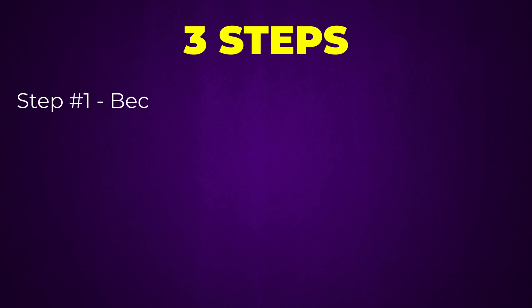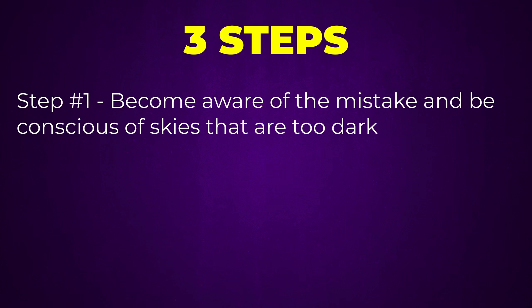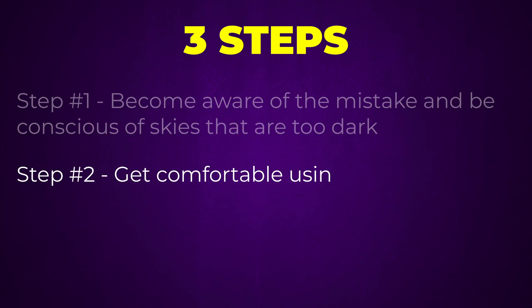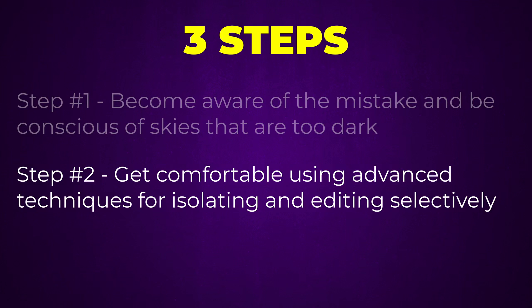So how do you guarantee that you never make this mistake in your own editing again? Well, in three steps. You've already covered step one, which is to just become aware of the mistake and be conscious of skies that are too dark compared to everything else. Step two is to get comfortable using advanced layer masking techniques that let you isolate the various elements in your photos so that you can edit everything in just the right amounts. I've made a tool that helps you do this and I've given it to you for free in the link in the description and pinned comment.